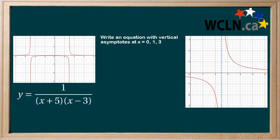In the next example, it states that there are vertical asymptotes at x equals 0, 1 and 3. Therefore, we write x for the asymptote at x equals 0, followed by factors of x minus 1 and x minus 3 for the next two asymptotes.